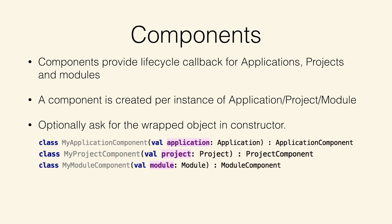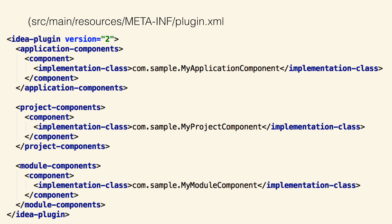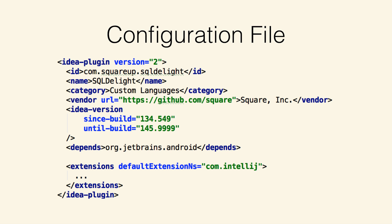The way you tell IntelliJ that these components exist is through something called the configuration file — an XML file you use to essentially describe the layout of your plugin. If you're familiar with Android and its manifest, it's a little similar. In it, you declare all of your components. It's a verbose way of listing your application components, project components, and module components. All the configuration file really is, is that idea plugin tag at the top, and then you list a bunch of stuff afterwards. It's used for things other than components — it also describes the plugin itself, like the name and which versions of IntelliJ it's applicable for. The other important thing is extensions, which I want to talk more about.